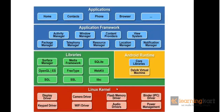In summary, the Linux kernel at the center provides all operating system functions. The libraries layer provides support for graphics, browser, encryption, and the media framework. The Application Framework provides high-level services our applications need. And finally, our application is installed at the top layer of the Android platform.